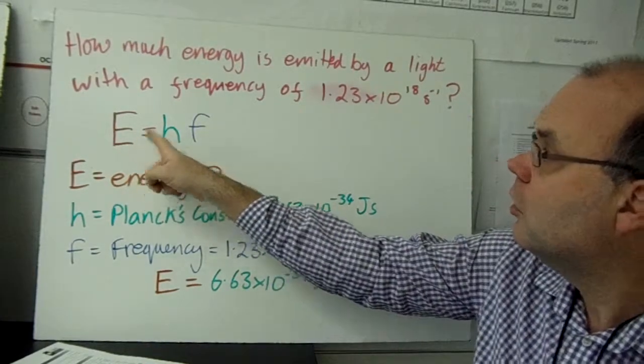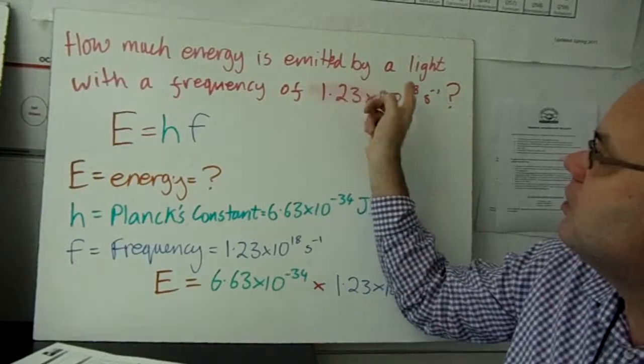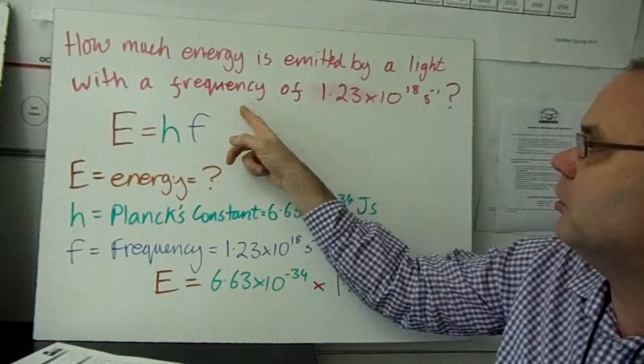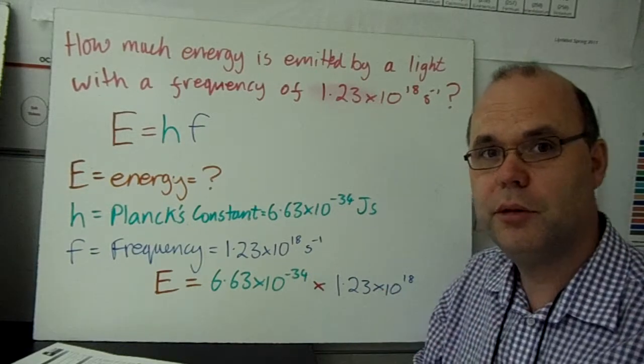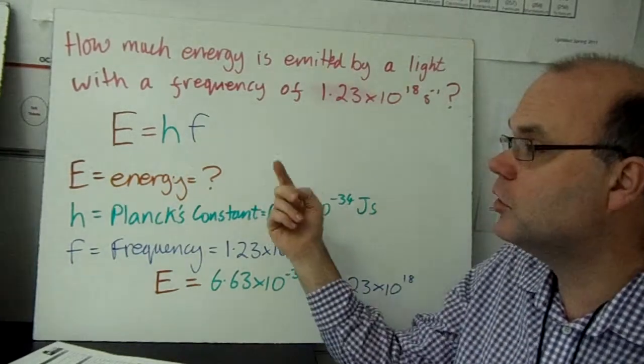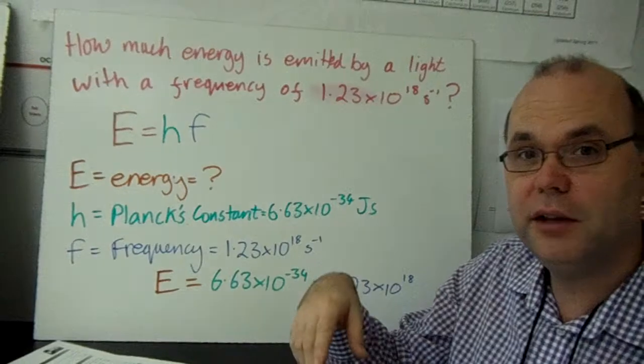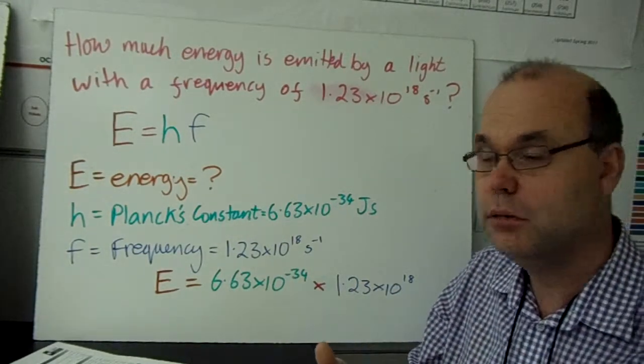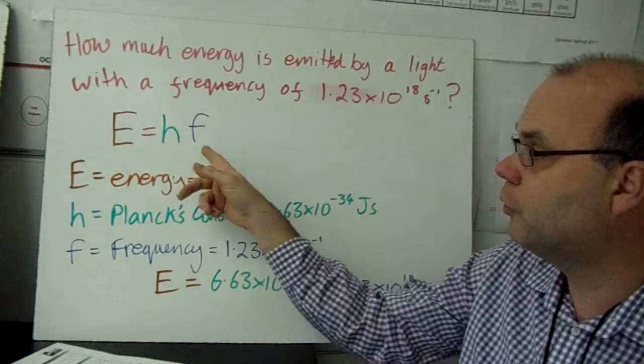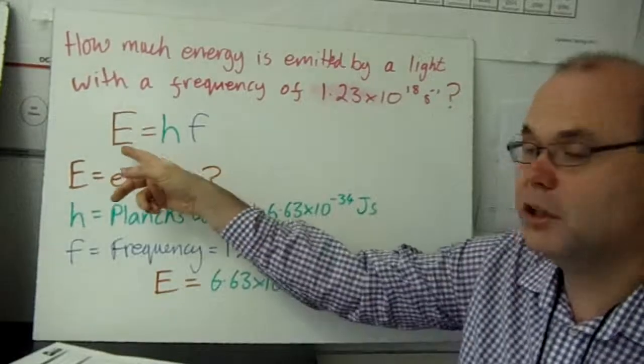You might see questions which give you the energy emitted by a light with a wavelength of something. That's a two-step problem. First, you've got to change the frequency into a wavelength using your first equation, C equals F lambda. And then once you know the frequency, you can calculate the energy.